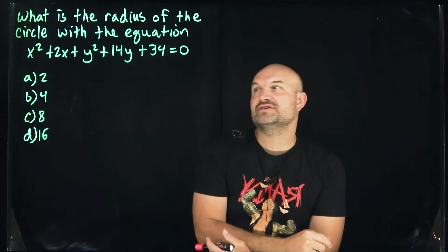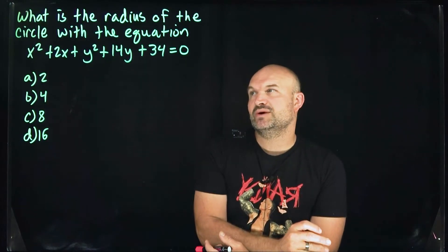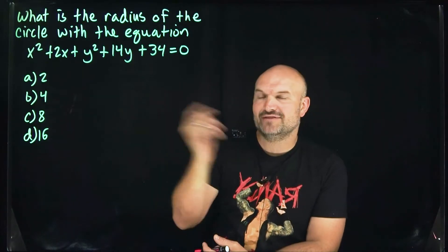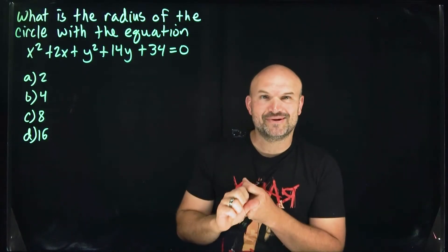In this problem, we need to find the radius of a circle with the equation x² + 2x + y² + 14y + 34 = 0. We have four answer choices. Let's get started.